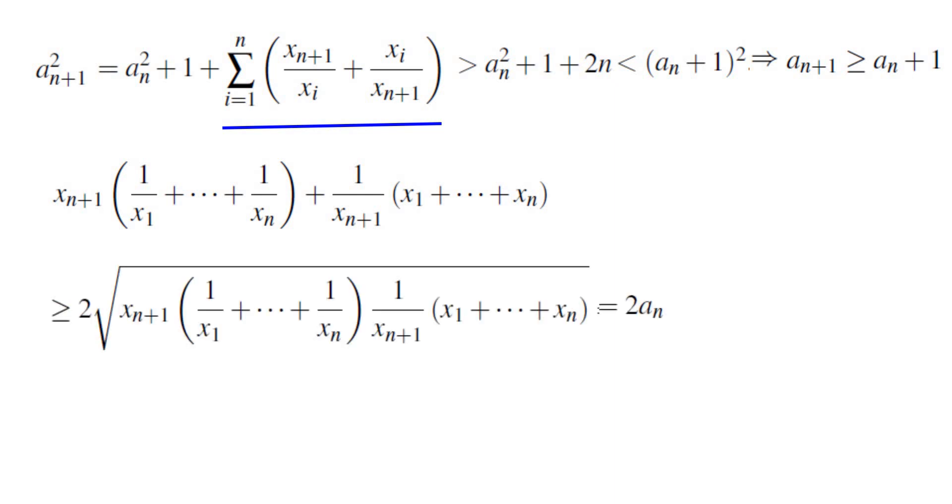If we can somehow show that the equality does not hold, then we would get aN plus 1 squared is more than aN squared plus 1 plus 2aN, which means aN plus 1 is at least aN plus 2.